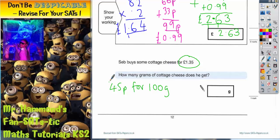So all we need to do is see how many 45p's go into £1.35. The easiest way of doing this is just to count up in 45p's since it's quite a small amount. So if he spends 45p, he's going to get 100 grams.